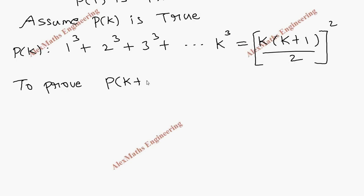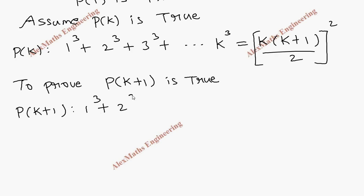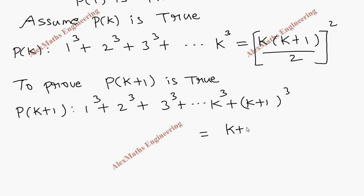Now we have to prove P of K plus 1. P of K plus 1 states: 1 cube plus 2 cube plus 3 cube plus dot dot dot plus K cube plus the next term, which is (K plus 1) whole cube. In this expression, wherever we see K, we substitute K plus 1.